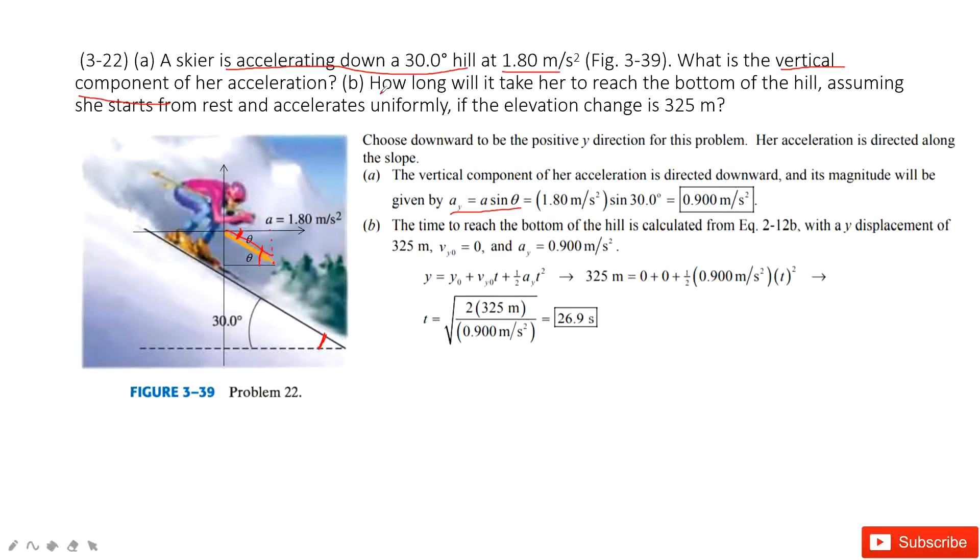The next question asks how long it will take to reach the bottom of the hill. We consider the initial velocity is zero, the acceleration is constant and uniform, and the elevation change is 325 meters.